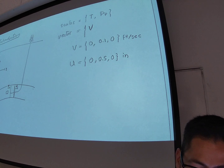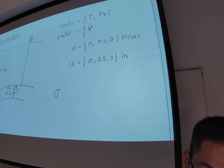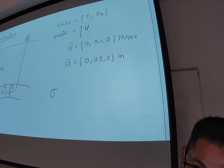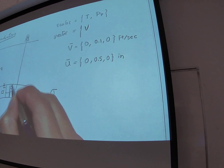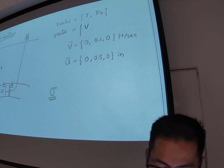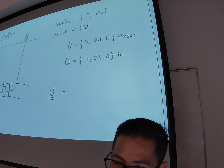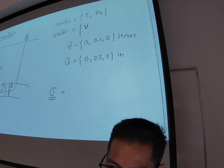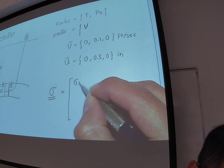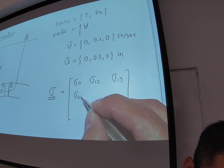Now we have another quantity to deal with: stress. Stress is a tensor. Vectors are denoted with a single line on top, while a tensor is denoted with two lines underneath. To define a tensor in three dimensions — particularly the stress tensor — we need nine elements. These elements are called sigma-1-1, sigma-1-2, sigma-1-3, and so on, forming a 3×3 matrix.